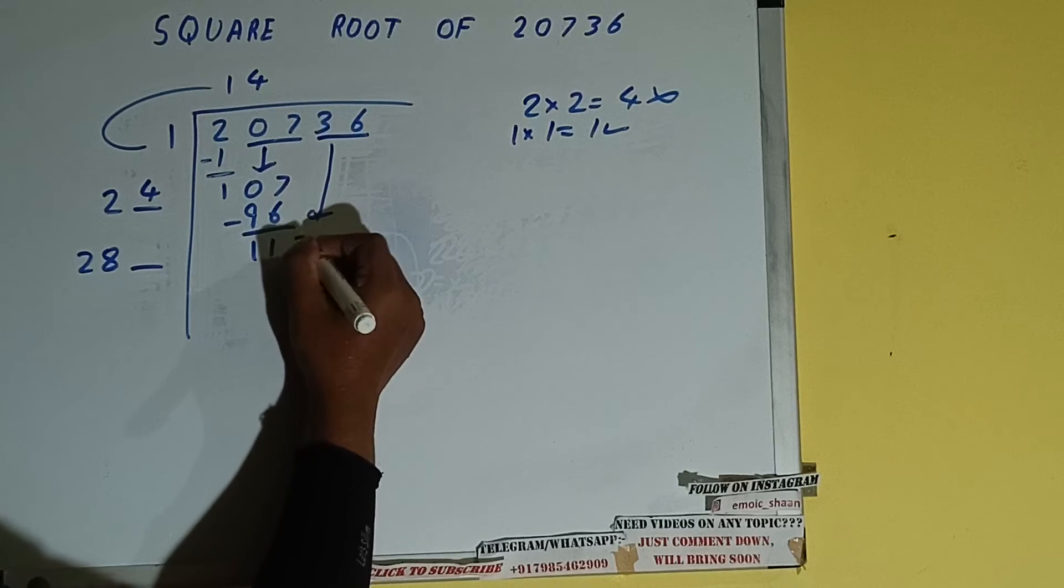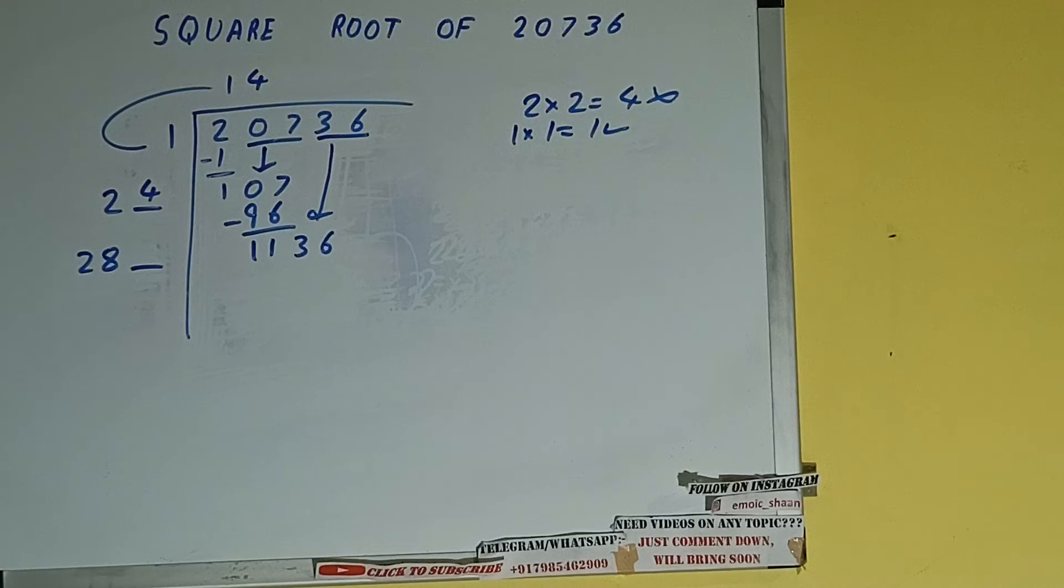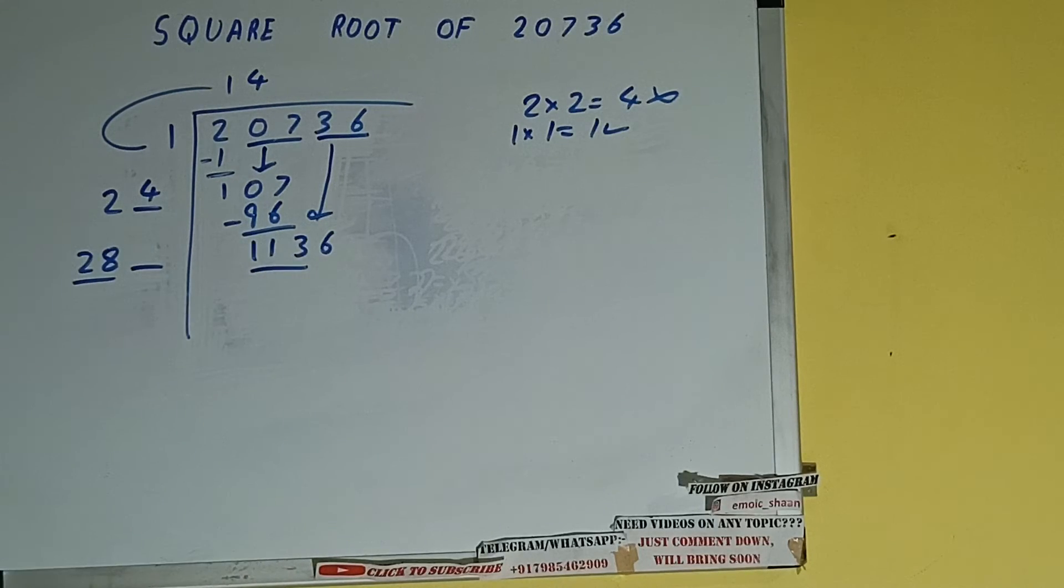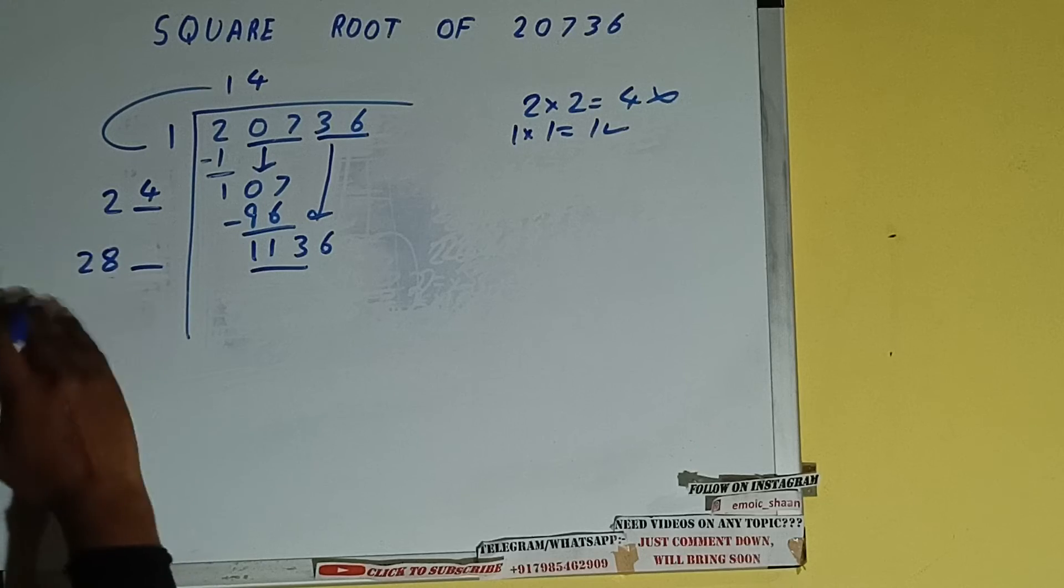So bring the next pair down and it will be 1136. Now compare this 28 with this 113. So 28 four times is 112, so we can try out 4 times.